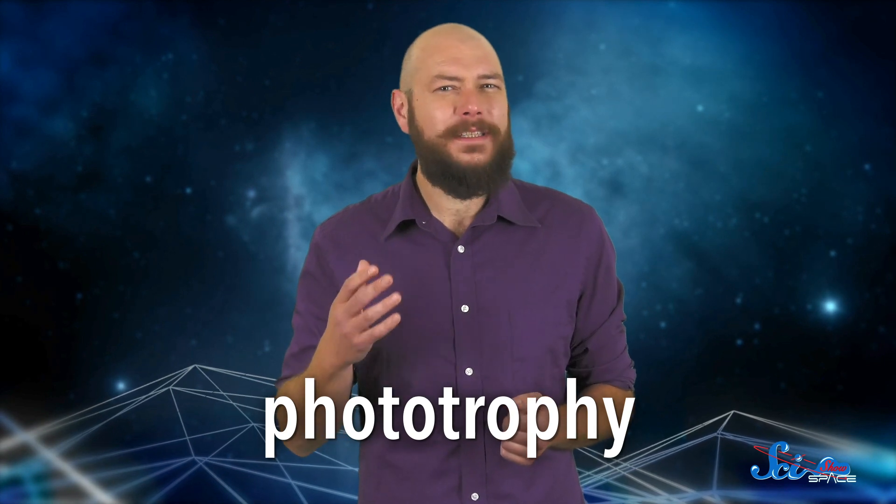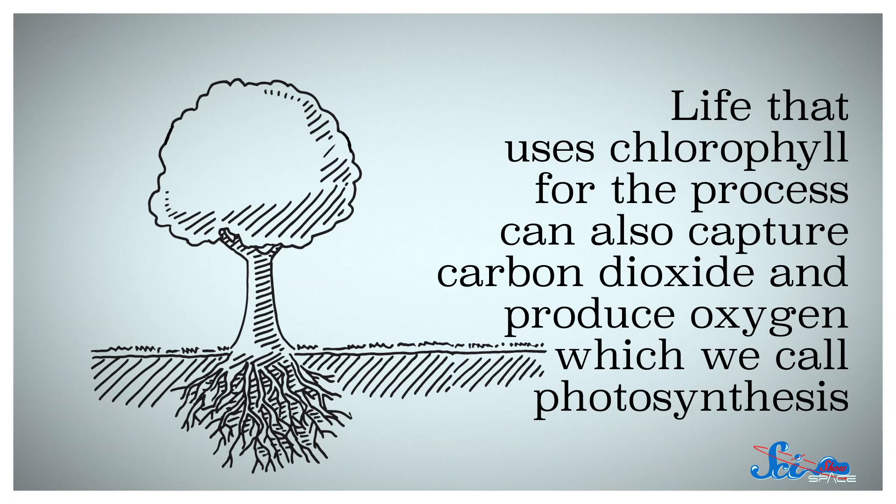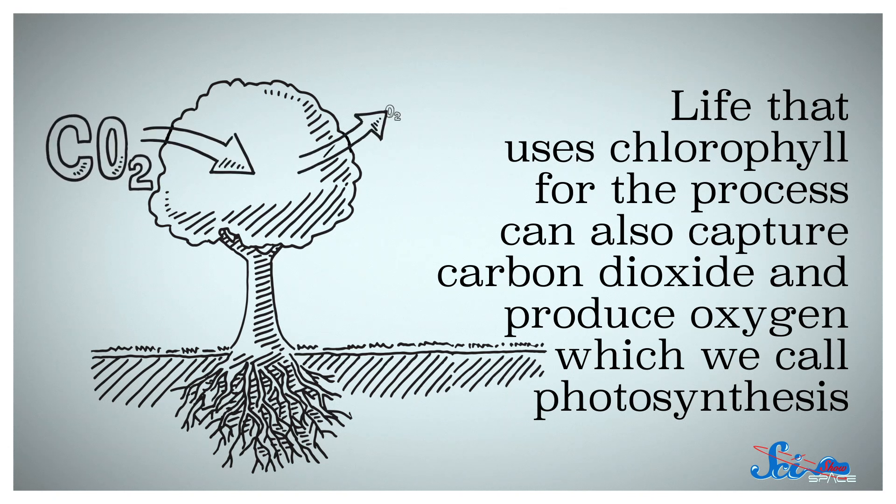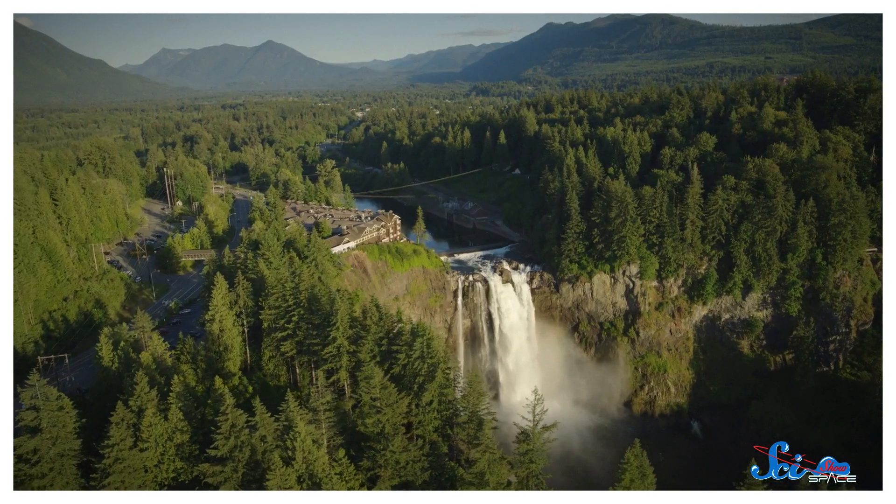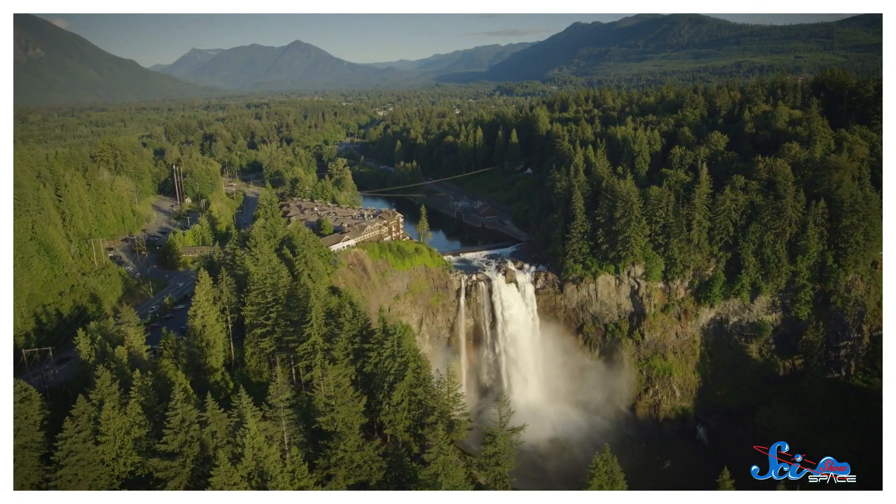And it evolved about 2.7 billion years ago. Light that uses chlorophyll for this process can also capture carbon dioxide and produce oxygen, which we call photosynthesis. Considering just how green the Earth is, it's clearly a successful strategy.